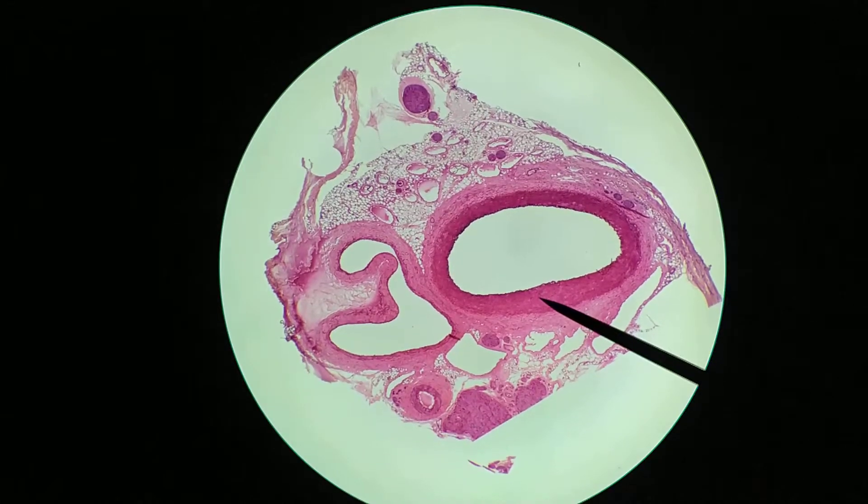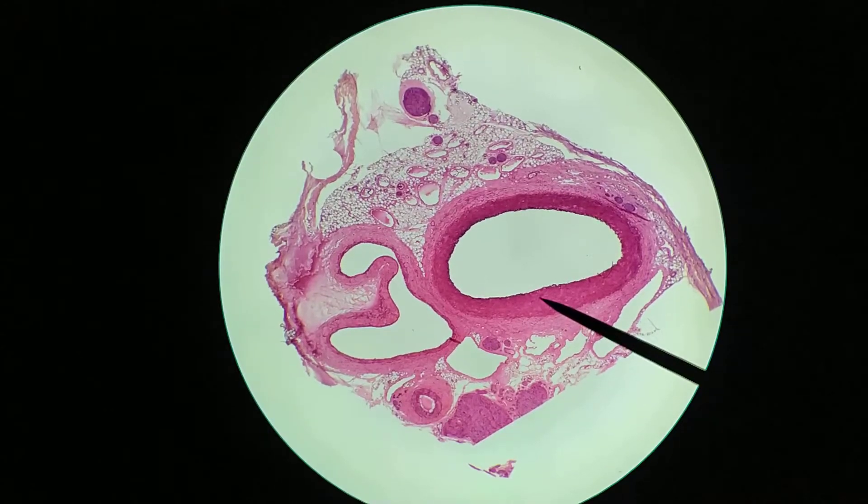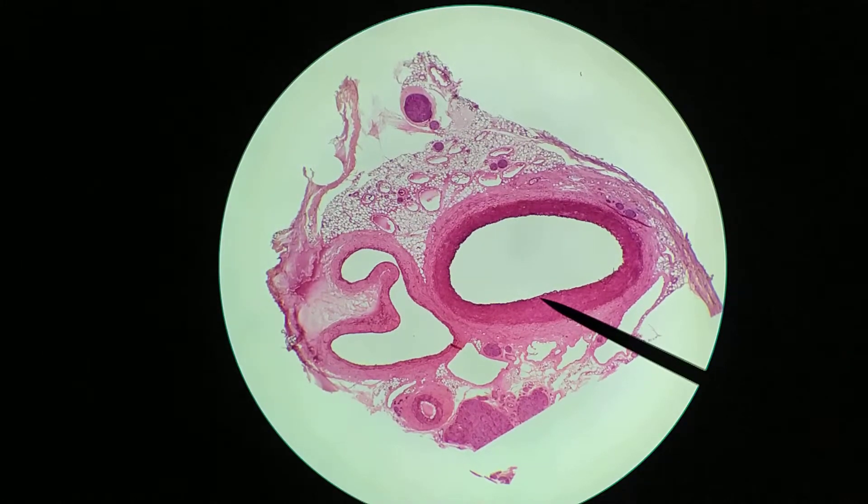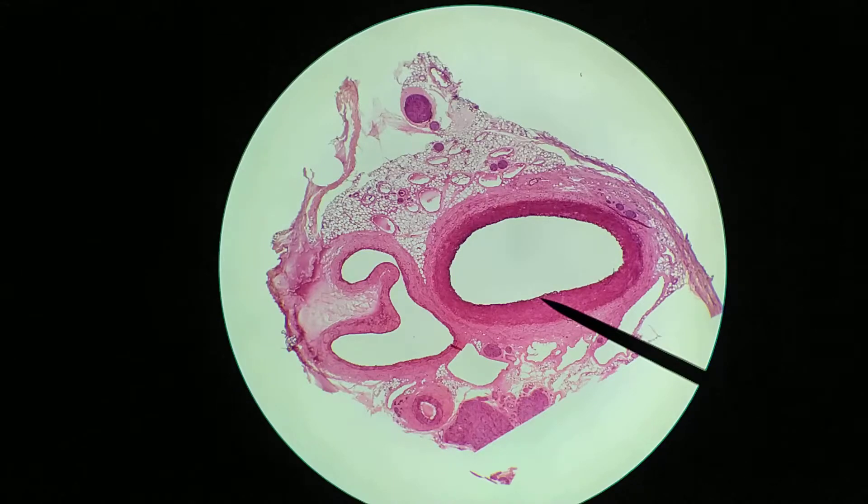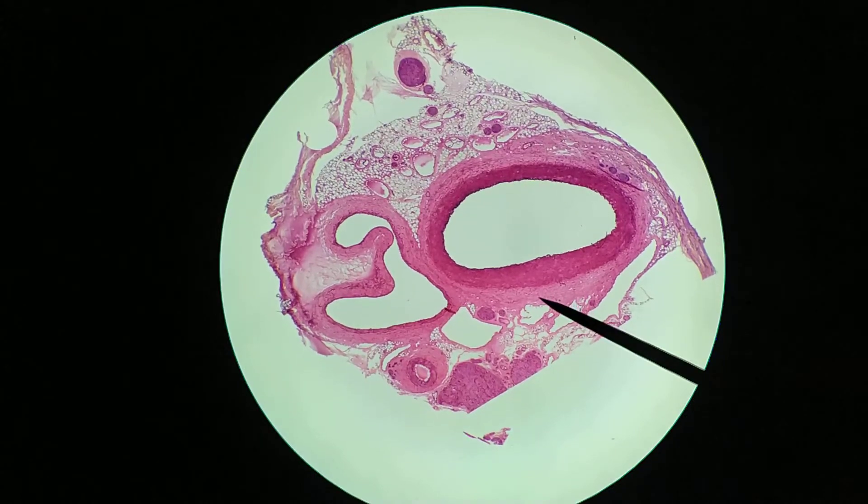What you're looking at here, what I'm pointing to with the pointer, is the tunica media. Near the surface where the endothelium would be, and at this magnification you really can't see the endothelium, but you can kind of make out there's kind of a dark outline, a wavy band of material. This is the internal elastic membrane. The internal elastic membrane has been stained, so you can actually see the elastic fibers relatively well. This is the artery, tunica media, and then we have the tunica adventitia beyond this.